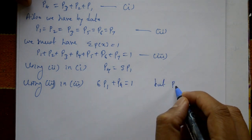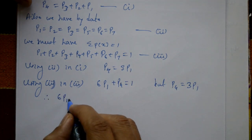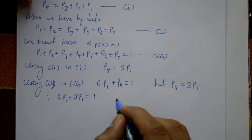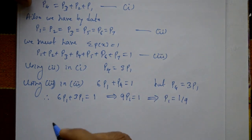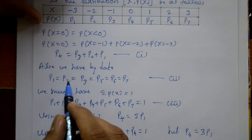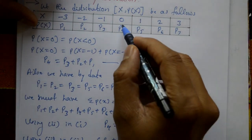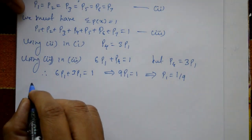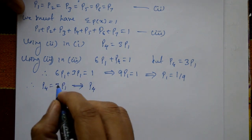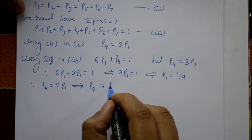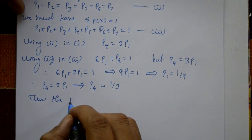Since p4 equals 3 times p1, substituting gives 6p1 plus 3p1 equals 1, so 9 times p1 equals 1, therefore p1 equals 1 by 9. All values p1, p2, p3, p5, p6, p7 are equal to 1 by 9. Then p4 equals 3 times p1 equals 3 times 1 by 9 equals 1 by 3.